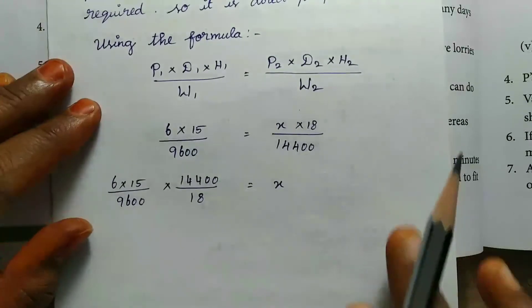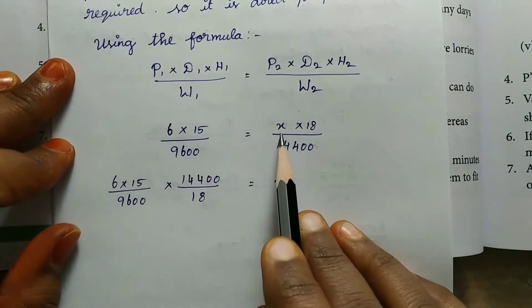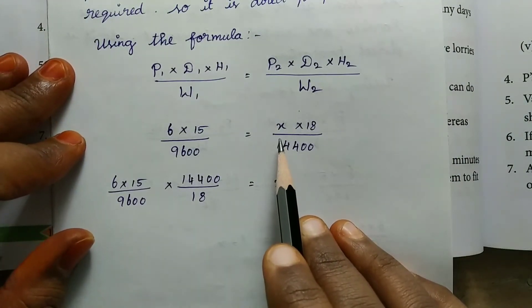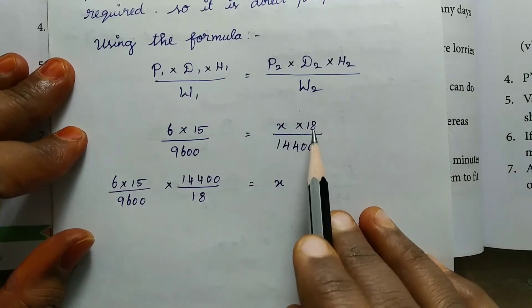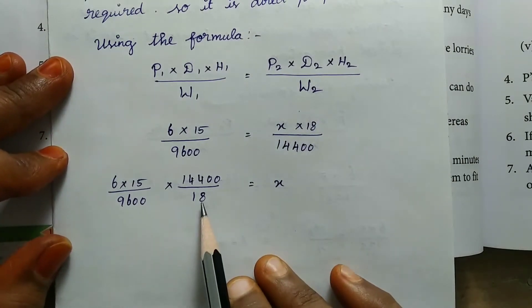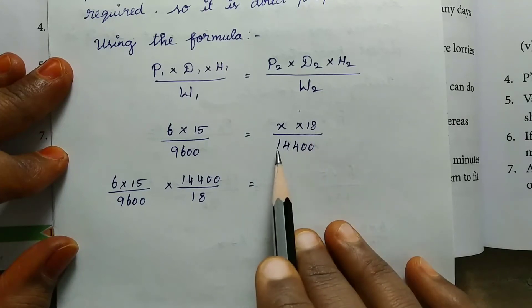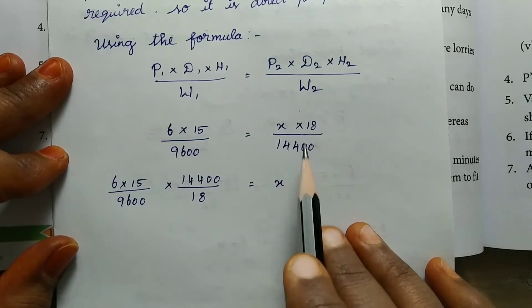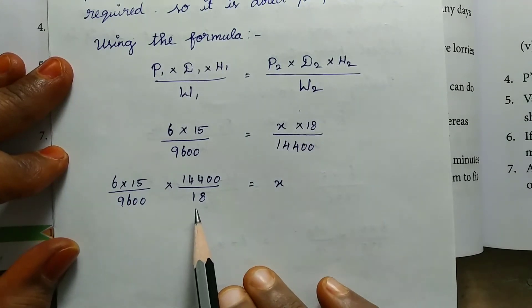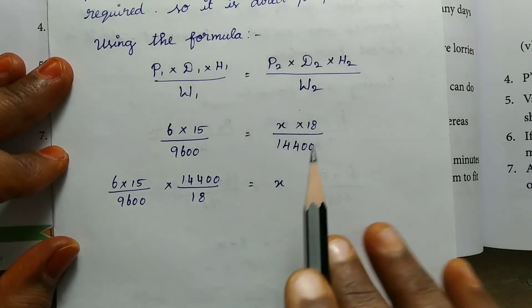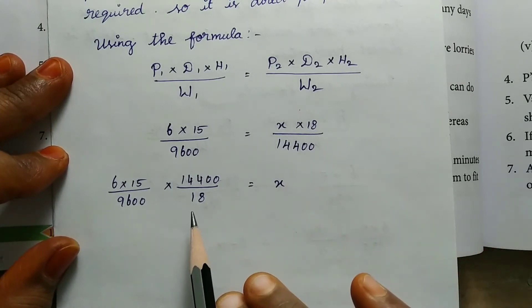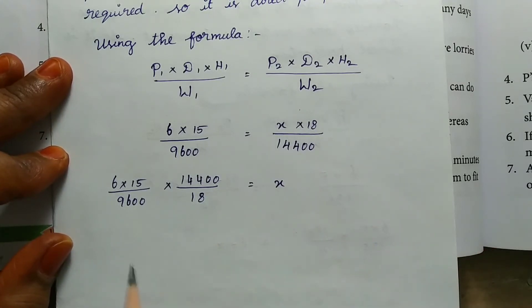Values we substitute. If we find X value, we need to move the values to one side. So 18 divided by 14400, move to one side. Fraction equal to one side move.